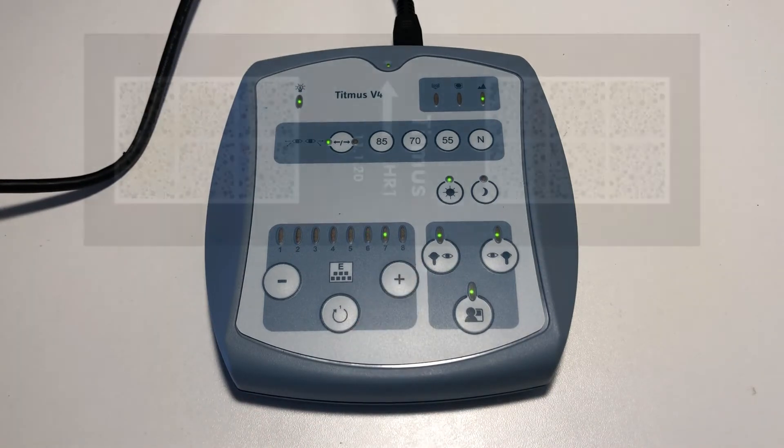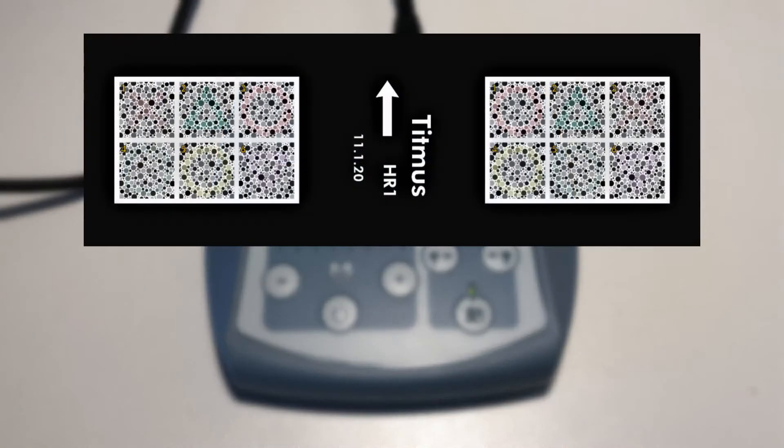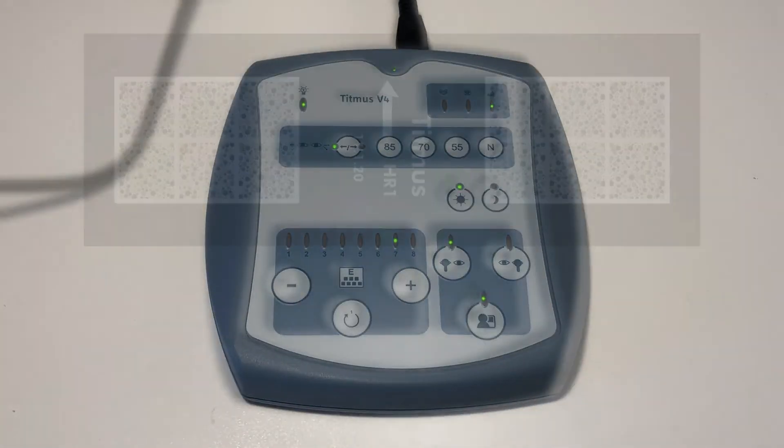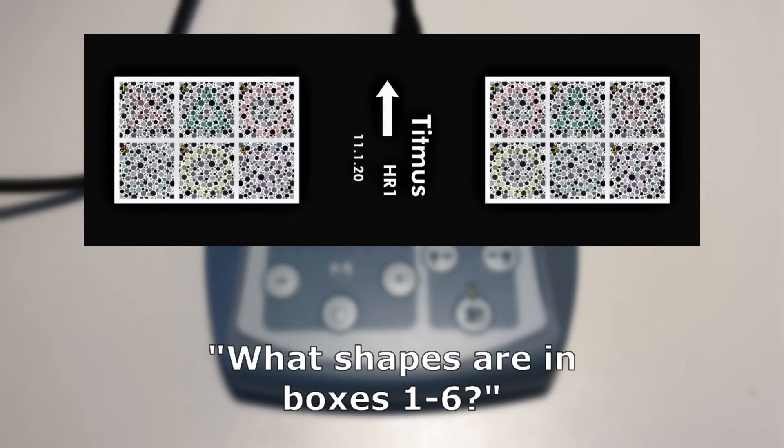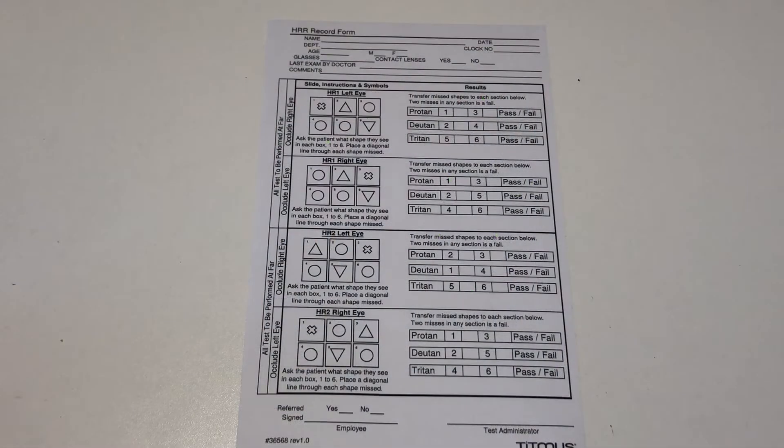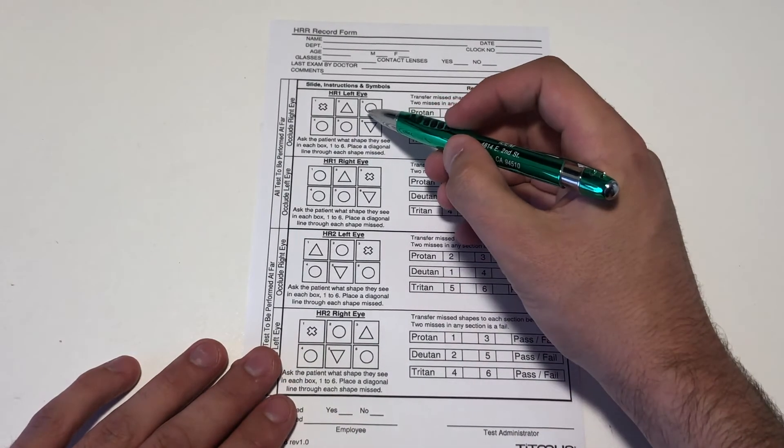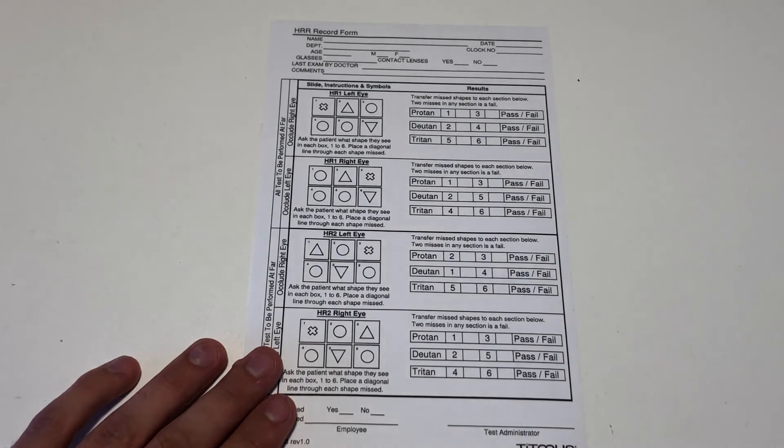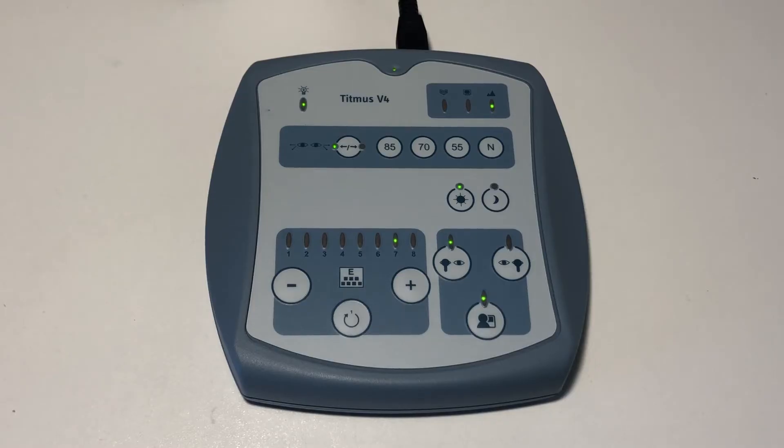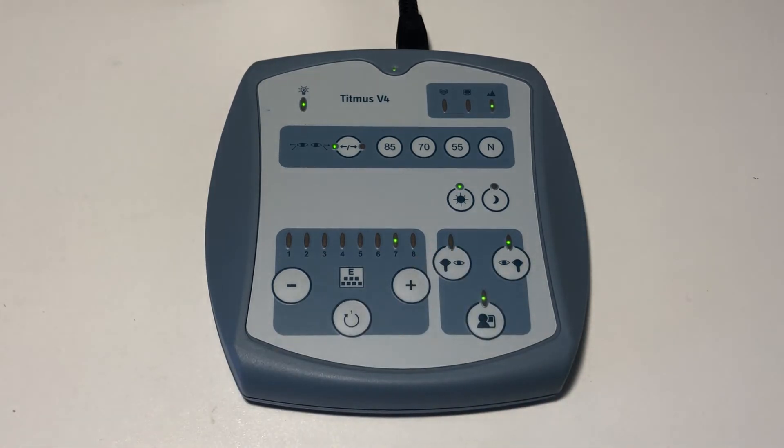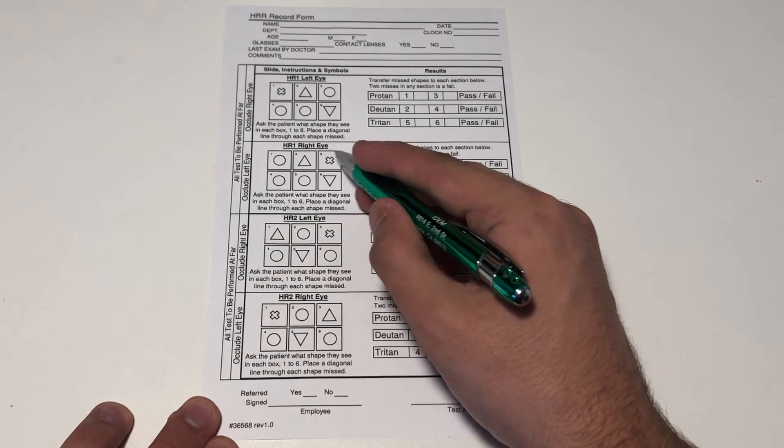Advance the slide to number seven. This slide tests for more specific types of color perception issues. Occlude the right eye. Ask the patient, when you look at the slide, what shape is in box number one, number two, and so on to number six. Record the results on the record form under HR1 left eye by crossing out each incorrectly identified shape. Now occlude the left eye and repeat the procedure. Record the results under HR1 right eye.